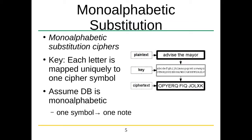We're going to use a monoalphabetic substitution cipher for this because it's mostly easy to use and easy to understand. Essentially, your key is what a symbol is transposed into. So given the characters A to Z, we might have a key of random characters O to V. If you look on the side here, we've got ourselves a plain text that we want to encrypt: "advise the mayor." We've got a key that maps letters like A to O, D to P, and V to Y, and that allows us to convert it into this unreadable text. This is a monoalphabetic substitution cipher — one symbol, one character.